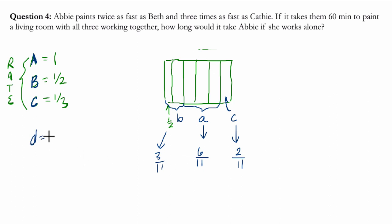So we know distance equals rate times time. So here, the amount of room that she's going to paint is one, that's our distance. We know her rate is now six elevenths, we're trying to solve for the time.